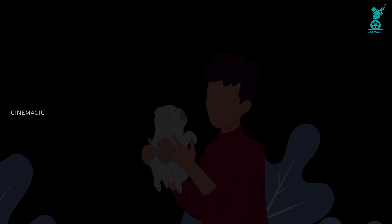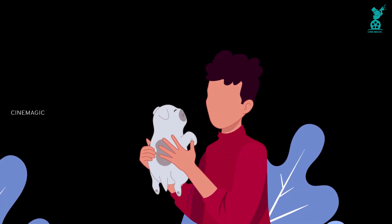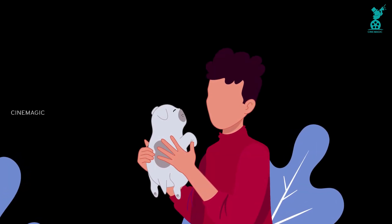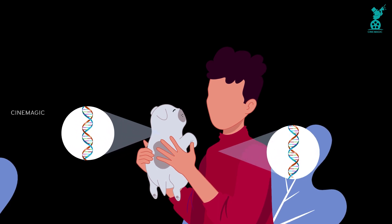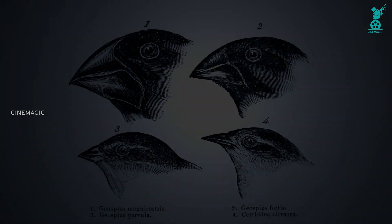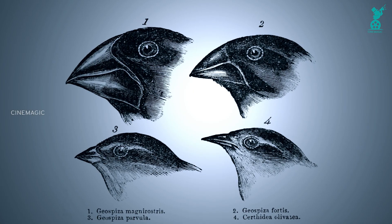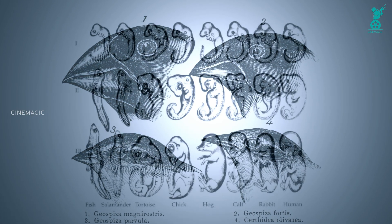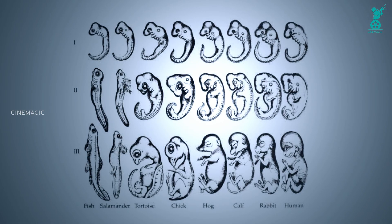In essence, every creature we see on earth, including humans, is a product of evolution. The differences seem vast from the outside, but at the DNA level, the disparity is minimal. Evolution is an ongoing process. The key question is whether it's happening at a pace visible to us — it's a process that unfolds over thousands of years and is impossible to observe within a human lifetime.